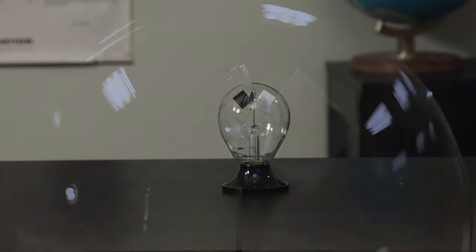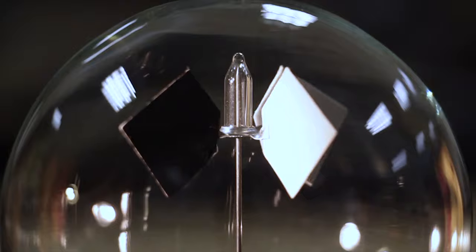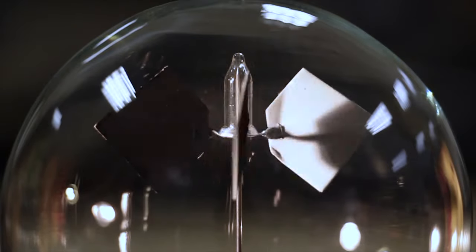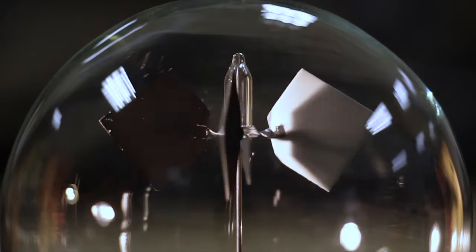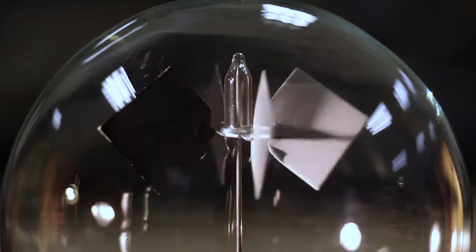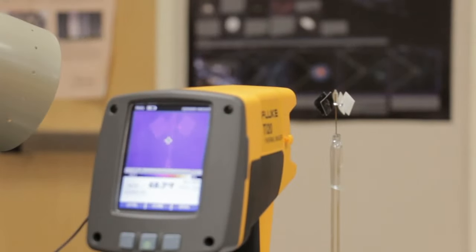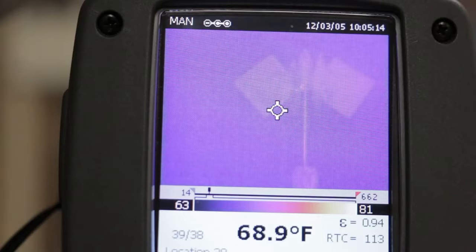Most people are familiar with the light mill radiometer. You shine light on it and it spins. The tiny air pressure inside changes to a bit higher on the dark side which pushes it into motion. This happens because the black side heats up faster than the white side.